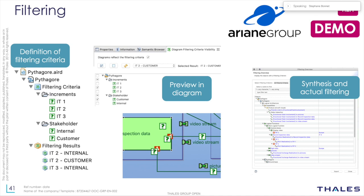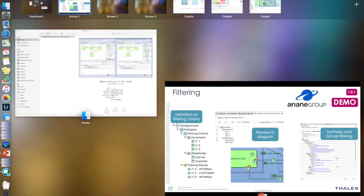Something new now is the Filtering add-on, funded by Airbus Group — not by Thales — but nevertheless open source. The idea is that sometimes you need to annotate your model elements with things like development increments or with viewer-specific information — what you want to show to certain audiences. You introduce filtering criteria, compute results, and produce a model that is filtered for one specific set of criteria.